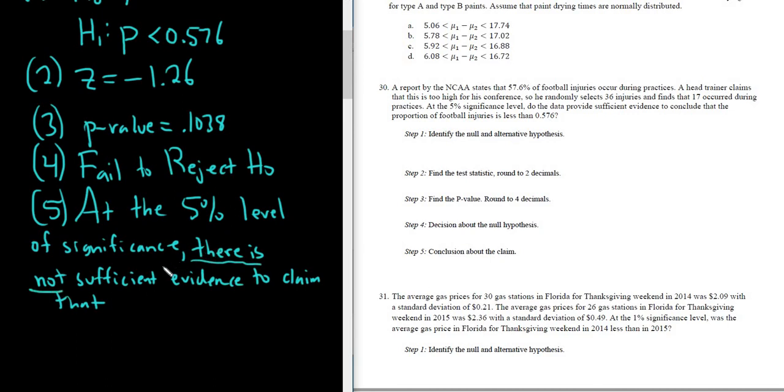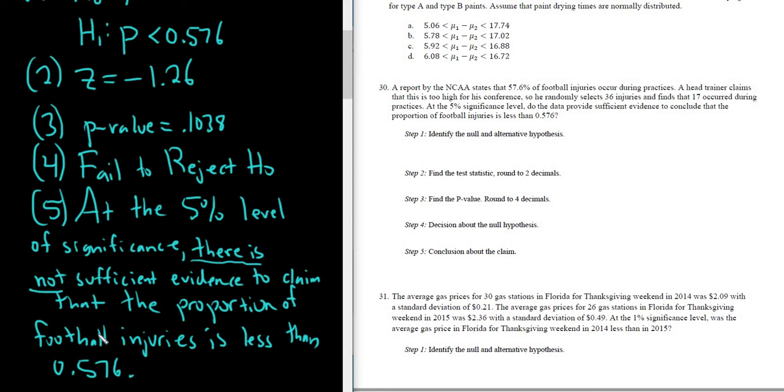That's really the main thing you have to do because the rest of it's pretty memorized. Because you memorize the first part. If you fail to reject, there is not. If you reject, there is. Then you just say sufficient evidence to claim that. And then just go straight to the last sentence. Everything after the word that. The proportion of football injuries is less than 0.576. And that's it.